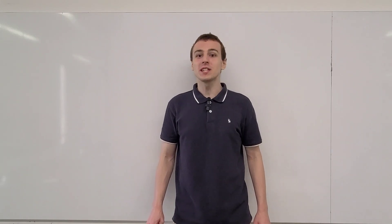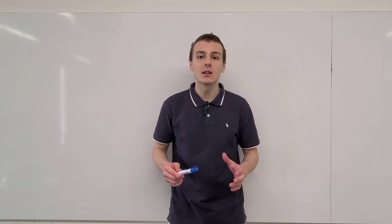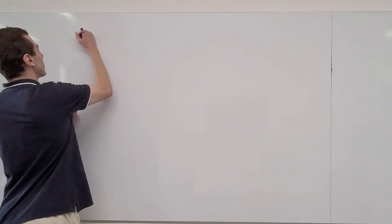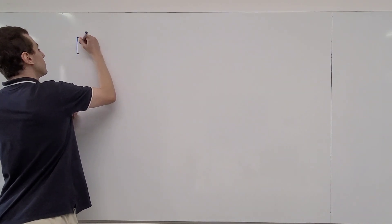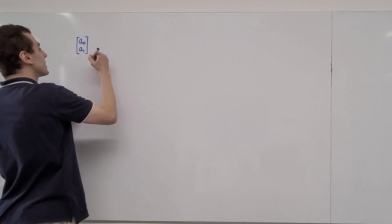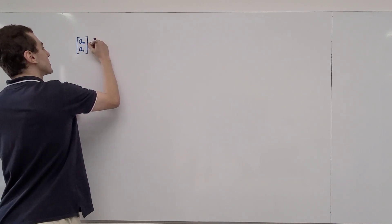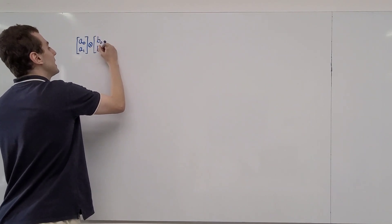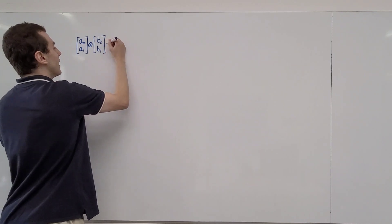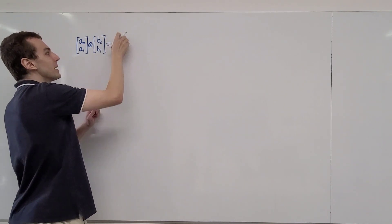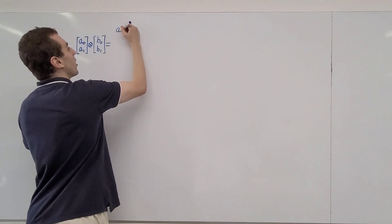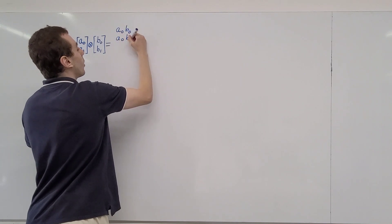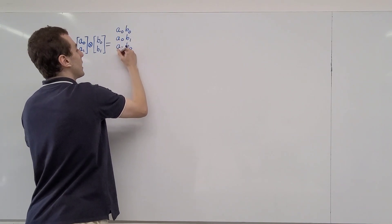Let's investigate a very interesting property of the Bell states. First, let's consider the column matrix with entries a0 and a1. Let's take the tensor product of this column matrix with another column matrix that has entries b0 and b1. We can evaluate this tensor product and that's going to give us a column matrix with four entries: a0b0, a0b1, a1b0, and a1b1.